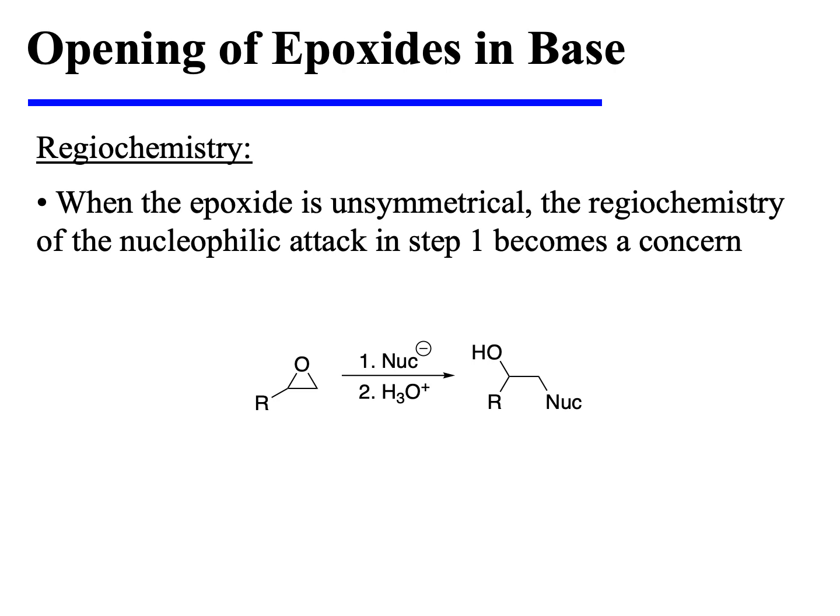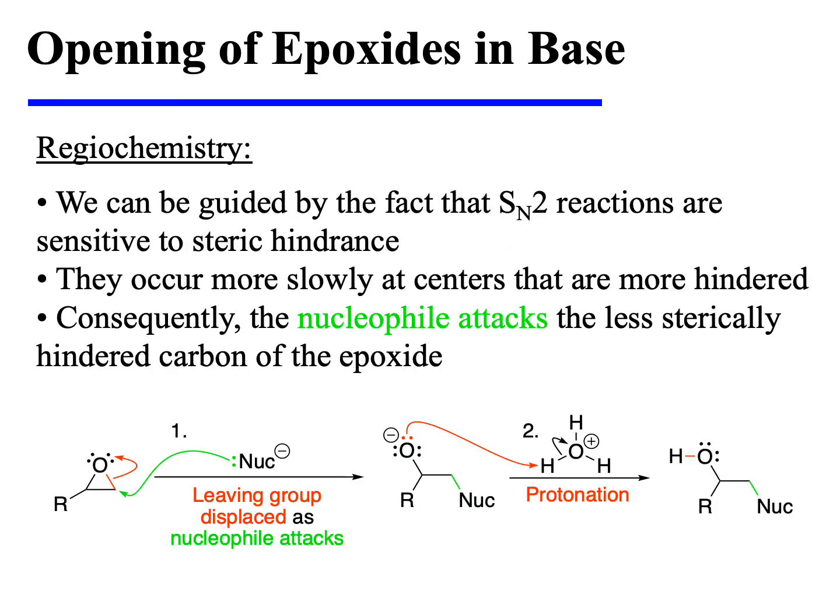When the epoxide is unsymmetrical, the regiochemistry of the nucleophilic attack in step one becomes a concern. We can understand how this regiochemistry plays out by considering the mechanism of the reaction. We can be guided by the fact that this is an SN2-like reaction, and SN2 reactions are sensitive to steric hindrance — they occur more slowly at centers that are more hindered. Consequently, the nucleophilic attack occurs at the less sterically hindered epoxide carbon.